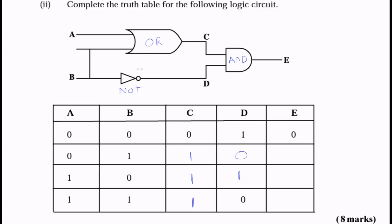Now you've finished working out those two gates. The last gate you have to go through is your AND gate, which will give you your output for E. So if C is 0 and D is 1, going through the AND gate, you will get a 0. Remember, the AND gate only produces an output that is high when both of your inputs are high. So 0 and 1 gives you 0, 1 and 0 gives you 0, 1 and 1 is the only one that gives you 1, and 1 and 0 again gives you 0.